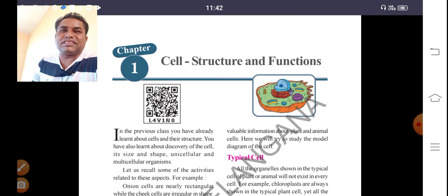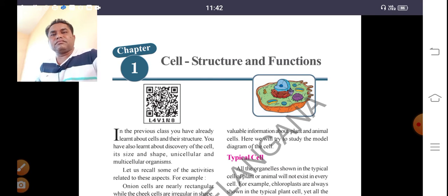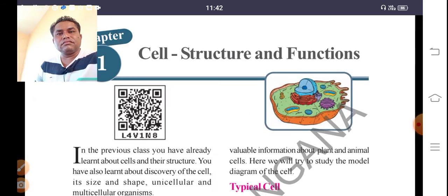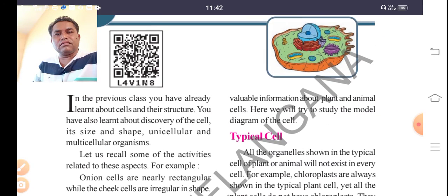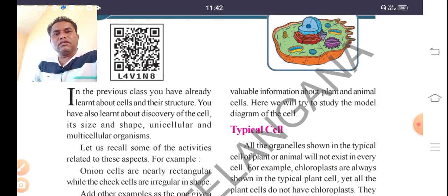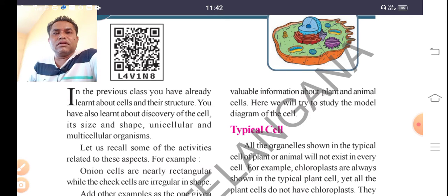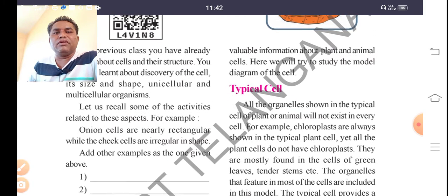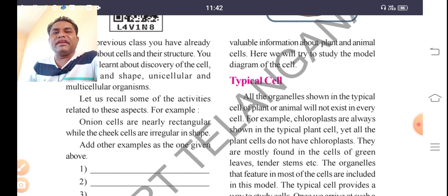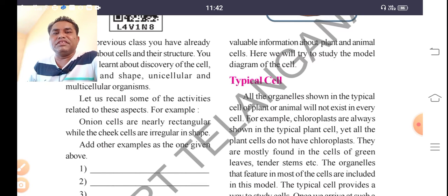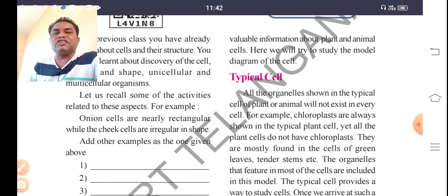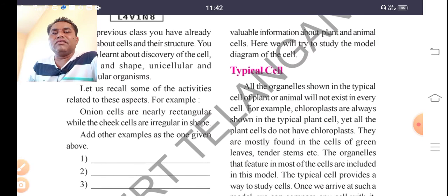Let us understand why we are studying cell structure and functions. Let us recall some activities: for example, onion cells are nearly rectangular, while cheek cells are irregular in shape. Add other examples as given above.